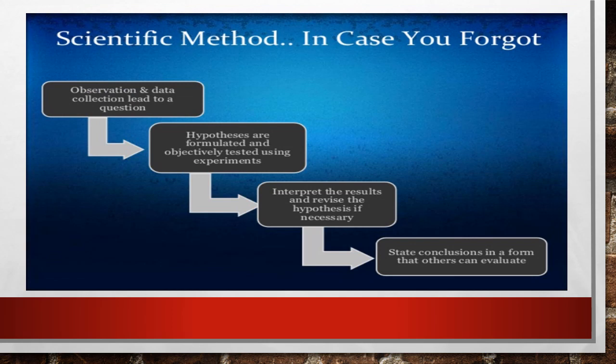In physics, we use what is called the scientific method. Here is a flowchart showing how the scientific method works. First, it evolves from a question. How do we arrive at a question? It starts with observation and data collection, which leads to the question — something you want to know. Then we form a hypothesis, which is a wise guess that is formulated and objectively tested using experiments. After experiments and observation, we interpret the results and revise the hypothesis if necessary. After all experimentation and results, we arrive at a conclusion in a form that others can evaluate.